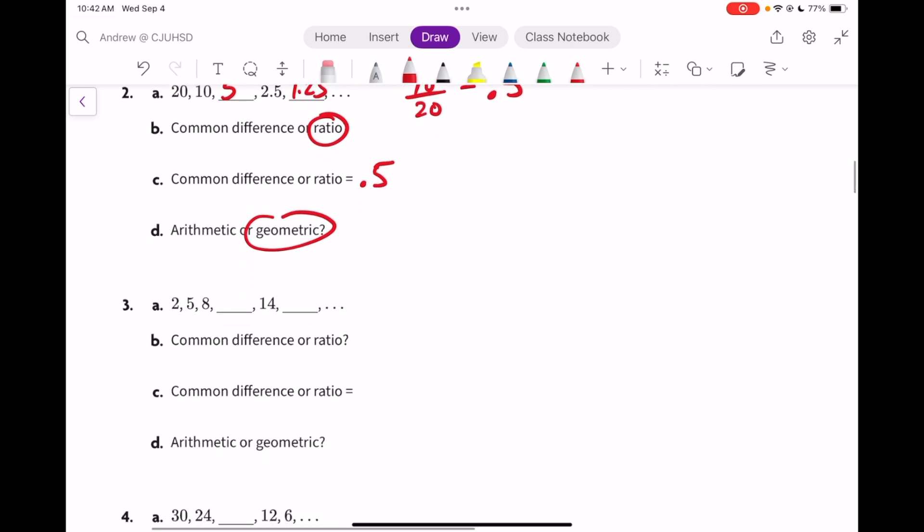Number 3 is adding 3 every time. So this will be 11 and this will be 17. This is a common difference of 3 plus 3, and that makes it arithmetic.